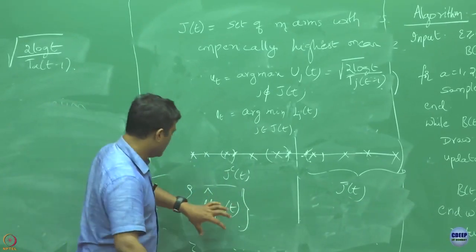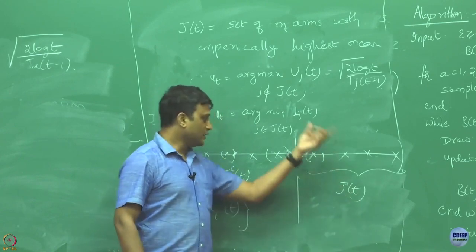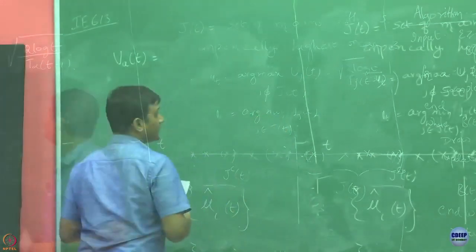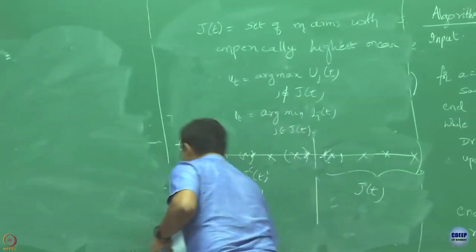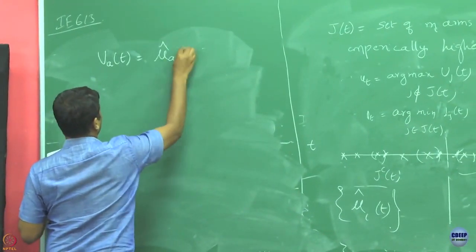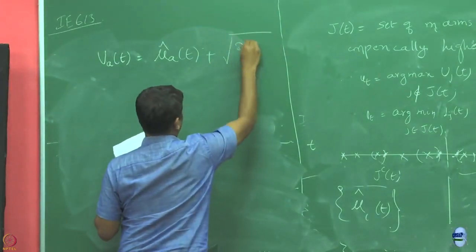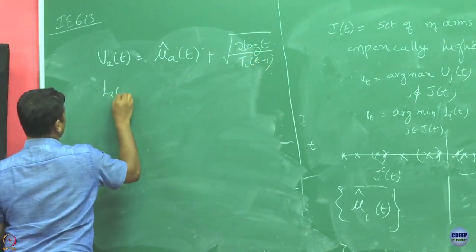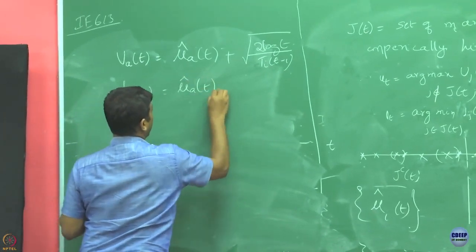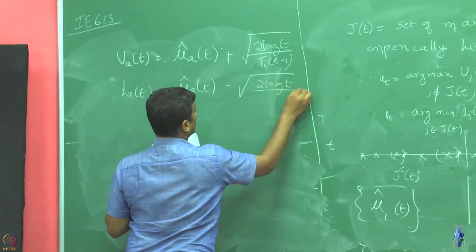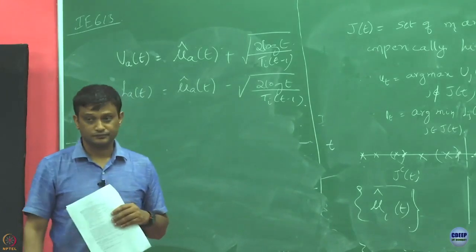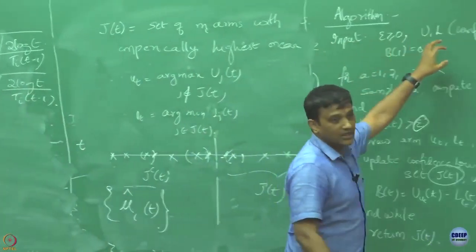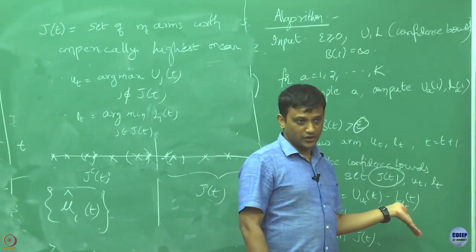This is what I have used to define my j(t) set and to resolve the conflict between the edge points, I have used my confidence terms, upper and lower confidence terms. It is actually the mean value plus the confidence term, and the lower confidence term is the mean value minus the same lower confidence.